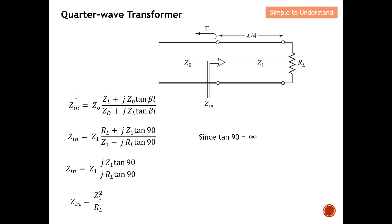Starting from the general transmission line equation, this is the equation I previously proved for transmission lines. In the general form, Z_L can be imaginary, but for this quarter wave transformer Z_L must be R_L, so I replace Z_L with R_L. Also, the characteristic impedance of the matching section is not the standard Z_0 of the feed line — it's the transformer's own impedance Z1. So I replace the line's characteristic impedance with Z1 in this equation.